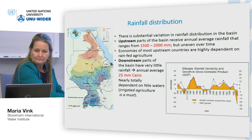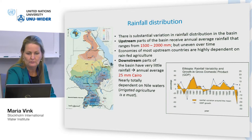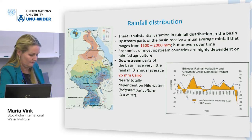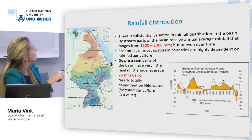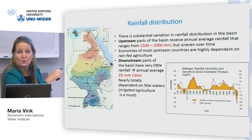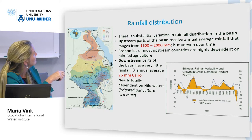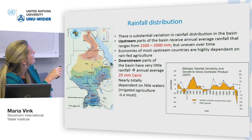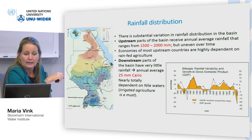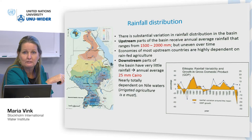The Nile is also very uneven when it comes to rainfall distribution. What we call upstream is actually south, and downstream is north — the river goes south to north. The blue areas on the map show quite large amounts of rainfall, then you come down to the dry areas up north. In Cairo, it basically doesn't rain — they have an average rainfall of 25 millimeters per year, and there are basically no other surface water sources in Egypt. So Egypt is entirely dependent on the Nile.